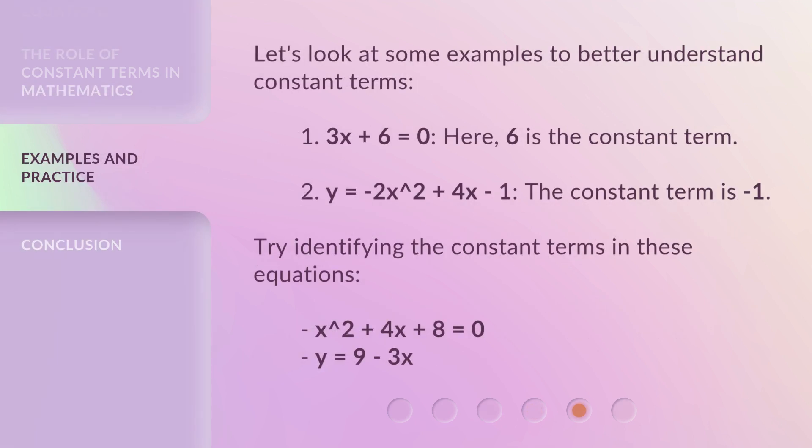Let's look at some examples to better understand constant terms. First, 3x + 6 = 0. Here, 6 is the constant term. Second, y = -2x² + 4x - 1. The constant term is -1. Try identifying the constant terms in these equations: x² + 4x + 8 = 0, and y = 9 - 3x.